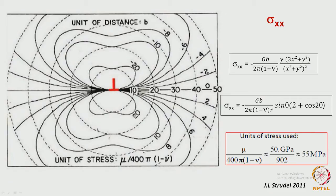The radial symmetry has been lost for the edge dislocation. In the screw dislocation, the shear stress value remains the same at a given r regardless of direction. For the edge dislocation, at the same r but different angles, the stress values are different. The equicontour plot shows how the stress varies as a function of r as well as theta.